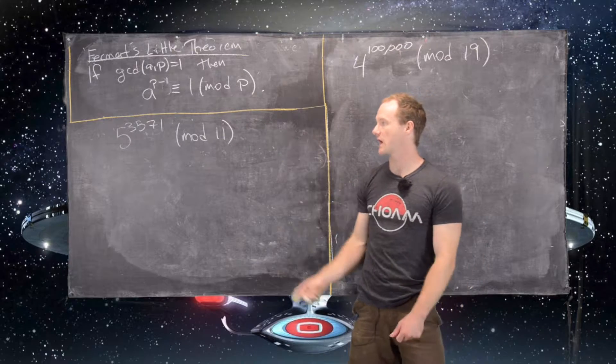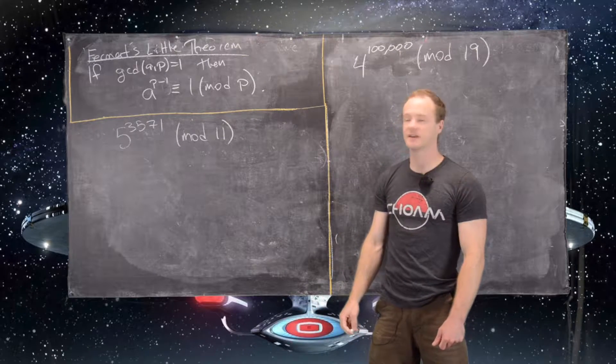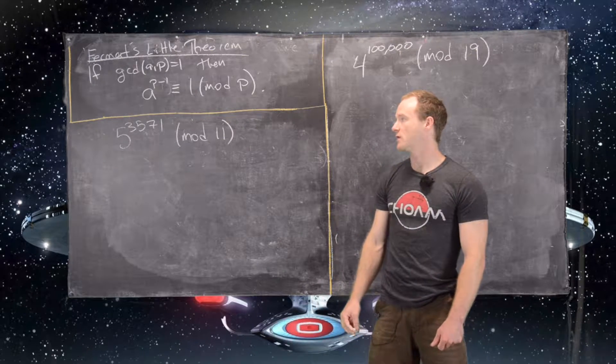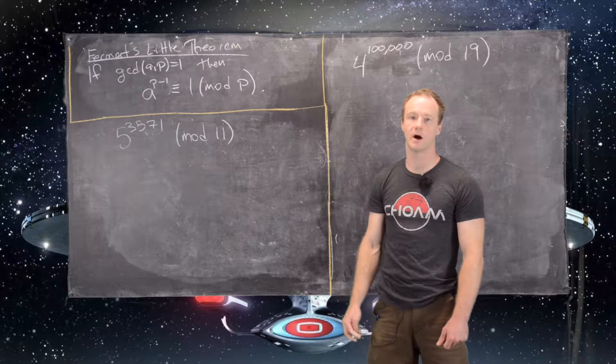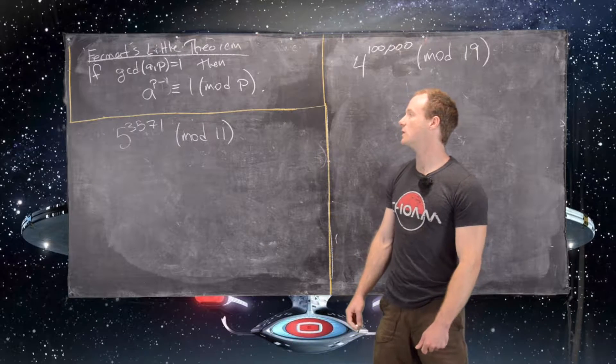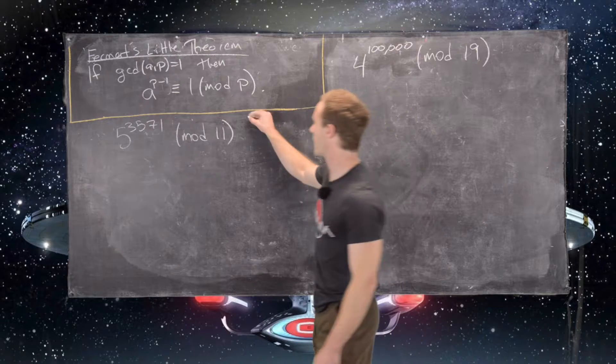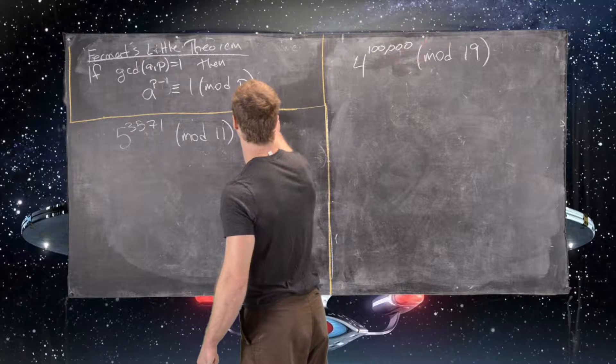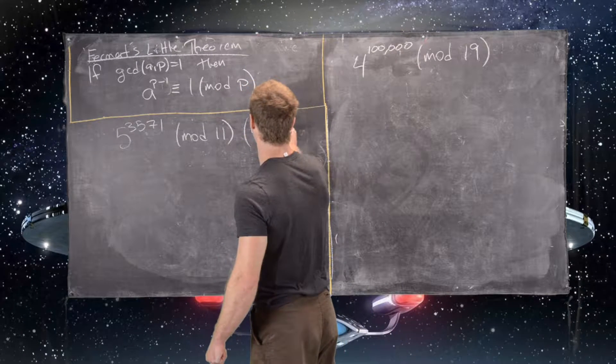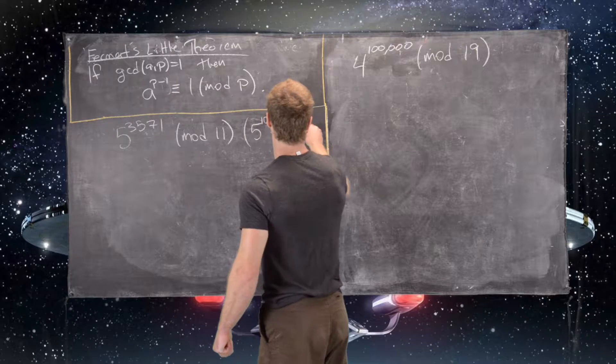So the first example we're going to look at is the following: 5 to the power 3571 mod 11. So here's what we know: we know that 5 to the 11 minus 1, which is 10, is congruent to 1 mod 11.